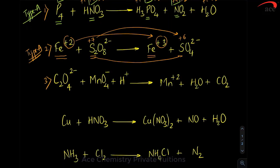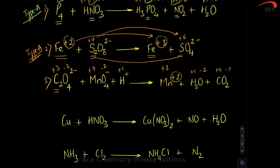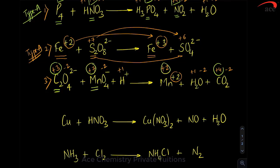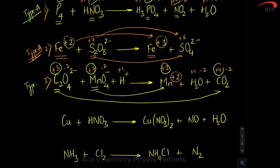In the third reaction, when you have practiced many oxidation number questions, you can easily identify which elements typically change. Carbon is +3, oxygen is −2, manganese is +7, oxygen is −2, hydrogen is +1. On the product side, manganese is +2 as an ion, hydrogen is +1, oxygen is −2, carbon is +4, oxygen is −2. Carbon is going from +3 to +4, so carbon is critical. Manganese is going from +7 to +2, so it is also critical. For us, this is a simple type — we call it Type A.